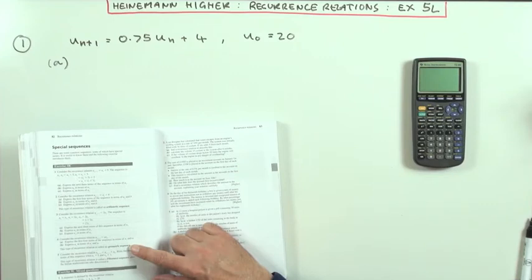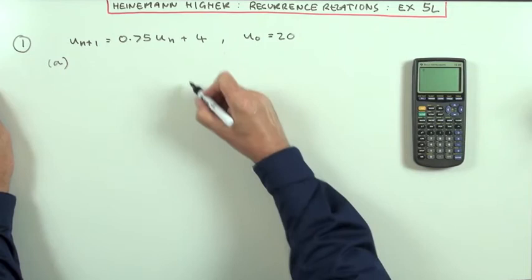You're given a recurrence relation and an initial value here, and it asks what's the value, first of all, of U₂.